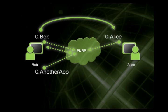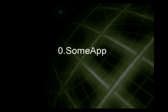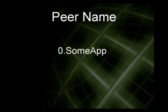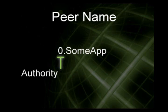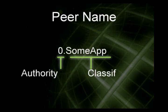So the question is, what's this "0.Bob" thing? Why are you using 0.Bob? Why can't you just say Bob or Alice? Well, this is a unique naming convention that we refer to as a peer name, and it's made up of two distinct parts. The first part is the authority, which basically tells us whether this peer name is secure or not. Unsecure peer names always start with a 0, which means anybody could be 0.SomeApp anywhere in the cloud because it's unsecure. Then there's the classifier, which uniquely identifies a peer name within a particular authority.